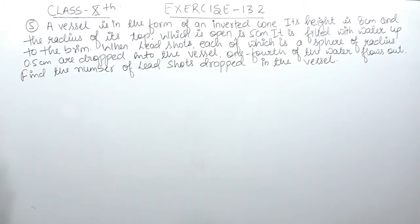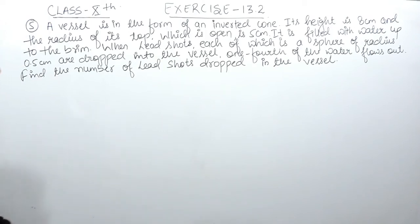The question says: a vessel is in the form of an inverted cone. Its height is 8 cm and the radius of its top, which is open, is 5 cm. It is filled with water up to the brim. When lead shots, each of which is a sphere of radius 0.5 cm, are dropped into the vessel, one-fourth of the water flows out.